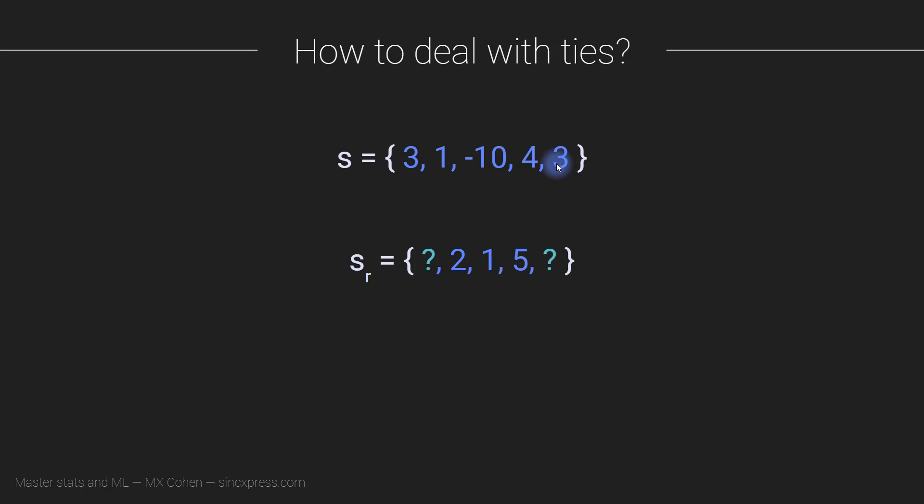Well, the answer from a tied rank perspective is to take the average—not the average of these numbers, because it's obviously just going to be 3, but the average of their ranks. The ranks here are tied for third position and fourth position, and so therefore the tied rank solution here is to call them both 3.5. So in fact, the tied rank transform of this set of numbers is 3.5, 2, 1, 5, and 3.5.